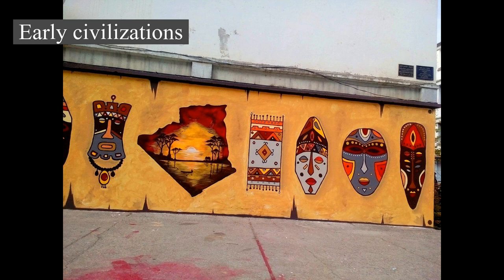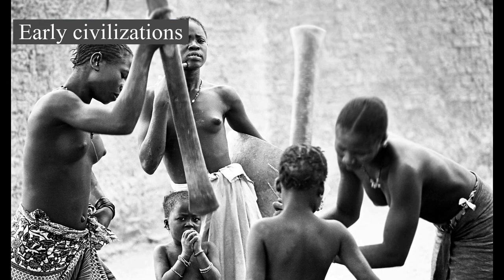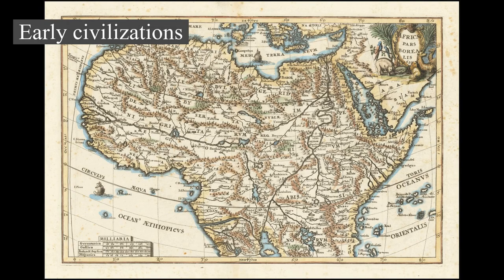In the early 7th century, the newly formed Arabian Islamic Caliphate expanded into Egypt and then into North Africa. In a short while, the local Berber elite had been integrated into Muslim Arab tribes. When the Umayyad capital Damascus fell in the 8th century, the Islamic center of the Mediterranean shifted from Syria to Kairouan in North Africa.